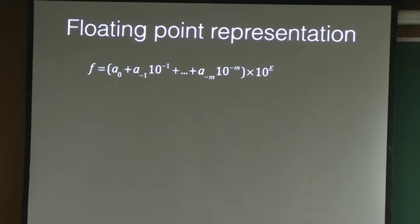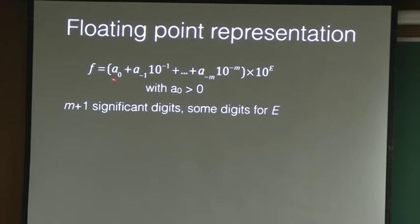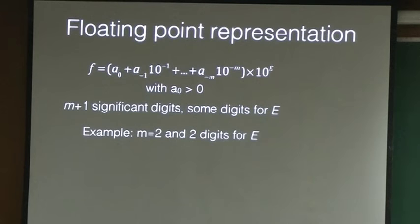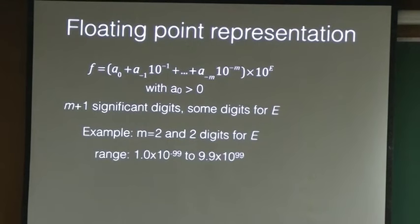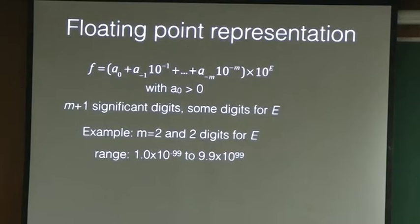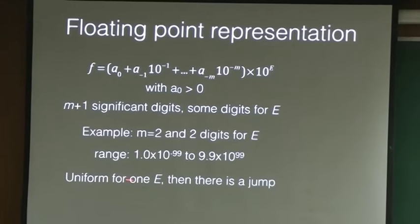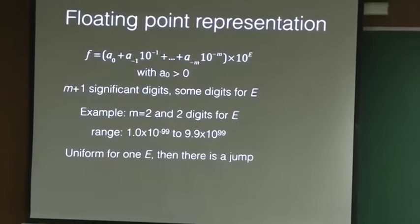Let us do an example. It has m plus 1 significant digits, and we need to keep some digits for the exponent. So with m equal to 2 and 2 digits for e, I am using 4 digits total. What is the set of numbers I can represent? My e is 2 digits meaning minus 99 to 99. The range increased from minus 2 to minus 99. The decimal part is 1.0 to 9.9. Are the numbers uniformly spaced in this representation? They are not uniformly spaced - they are uniformly spaced for one single e, but then when you jump to the next e, there is a jump.